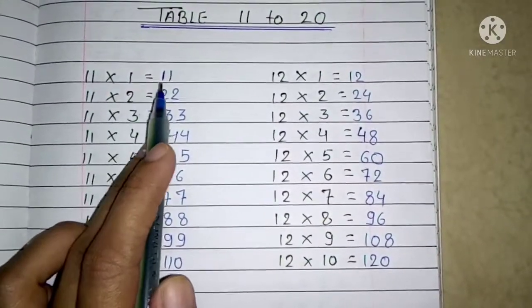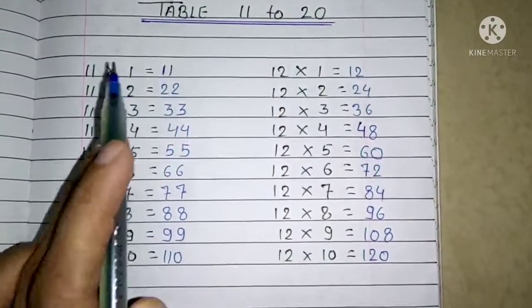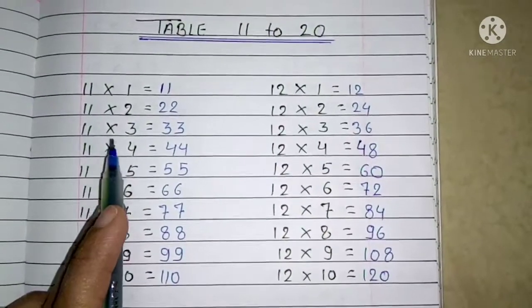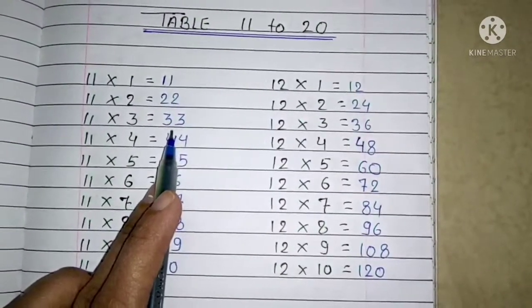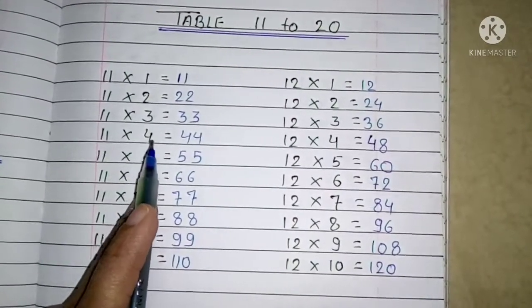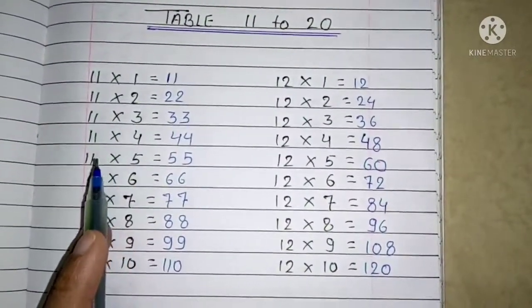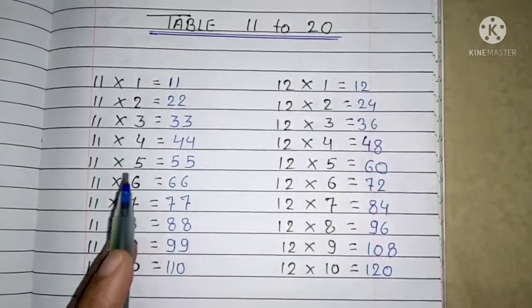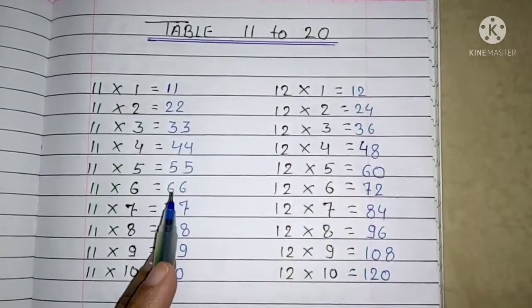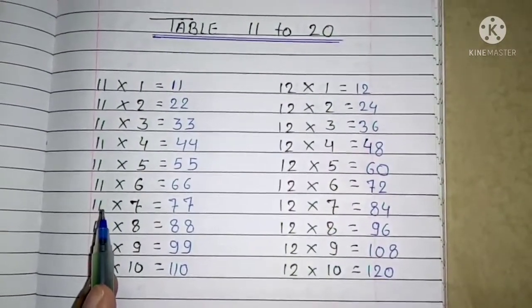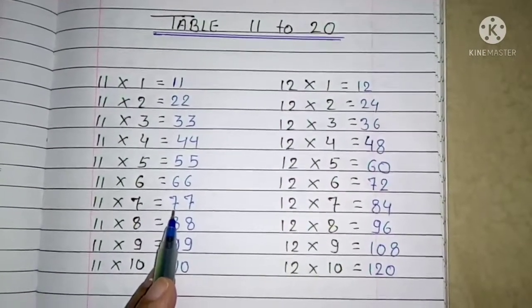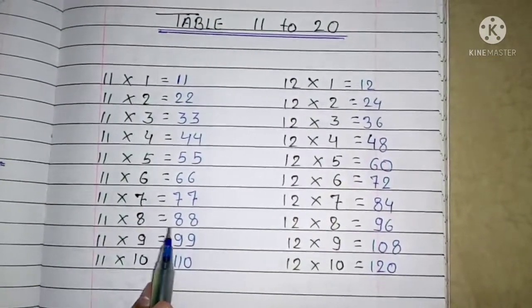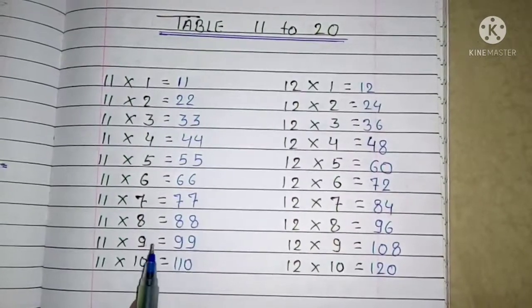11 times 1 is 11, 11 times 2 is 22, 11 times 3 is 33, 11 times 4 is 44, 11 times 5 is 55, 11 times 6 is 66, 11 times 7 is 77, 11 times 8 is 88, 11 times 9 is 99.